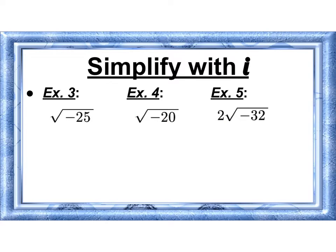We can simplify with i. So anytime you see a negative under a square root, you're going to have an i in your answer. So this becomes the square root of 25 times the square root of negative 1, which is 5i.